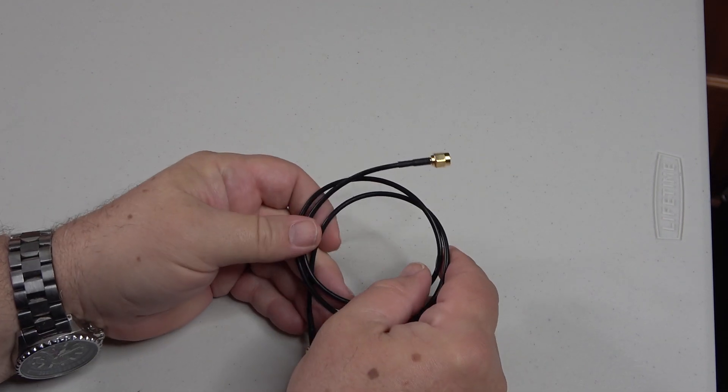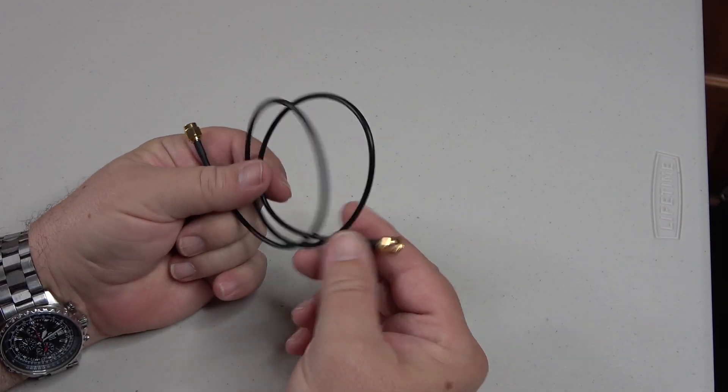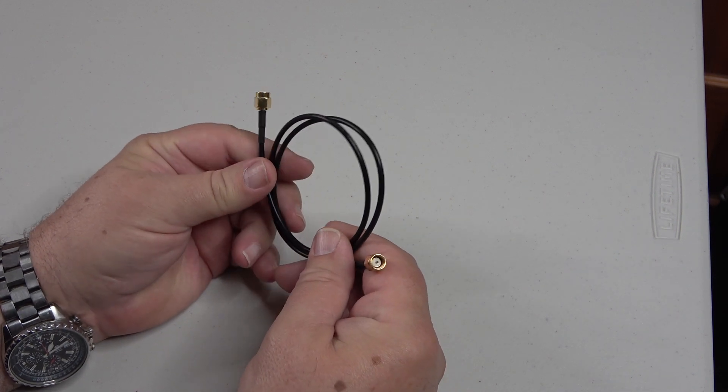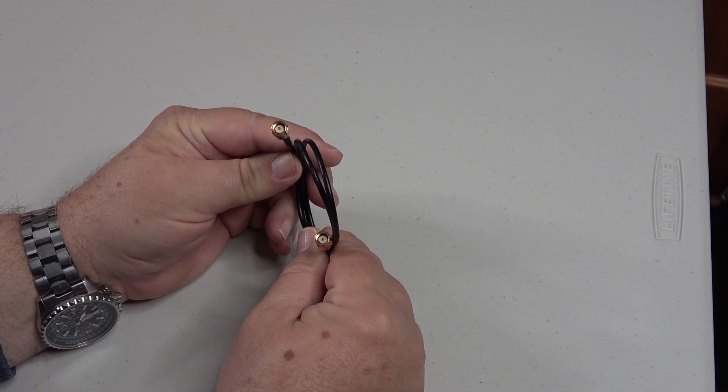The next thing we have is a cable with some SMA connectors on each one. This is, you know, 25, 26 centimeters long, and it's going to be used to connect the splitter to your SDR dongle.